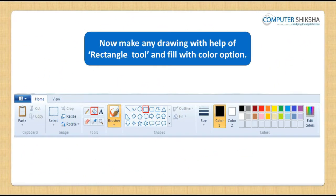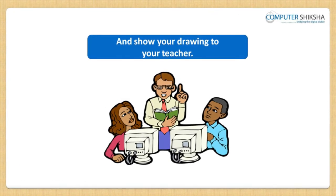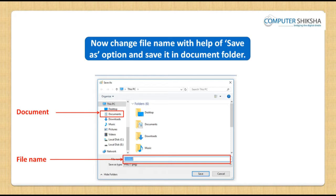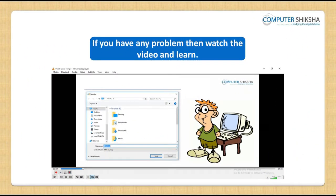Next, with the help of the rectangle tool, make any drawing and show how you will use the fill with color option. Then, with the help of text, write a name for the drawing and show the same to your teacher. Next, all of you type your own name in the same file and use the save as option to save the file in the documents folder. Watch and learn from the video in case of any problem.